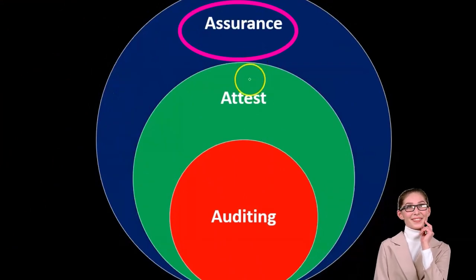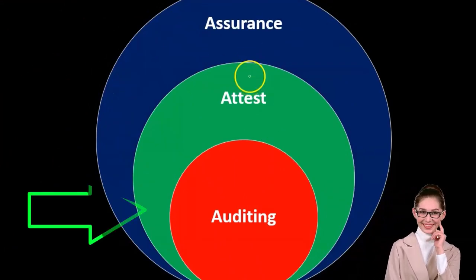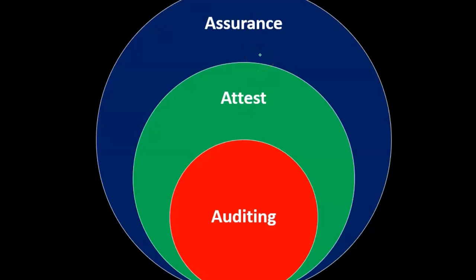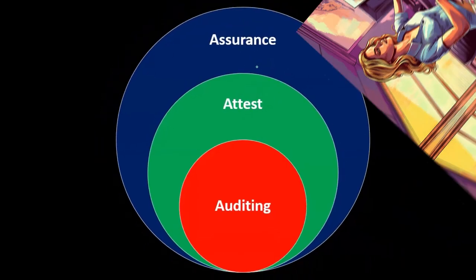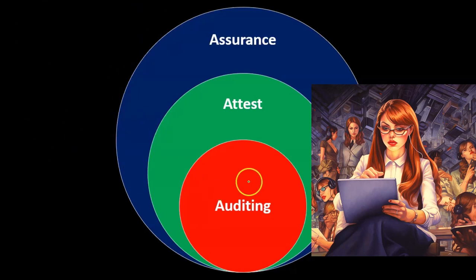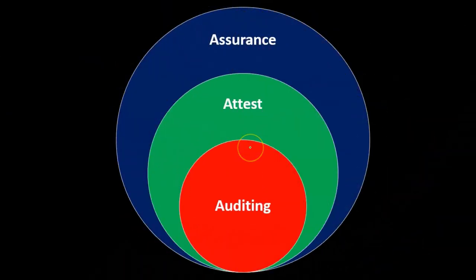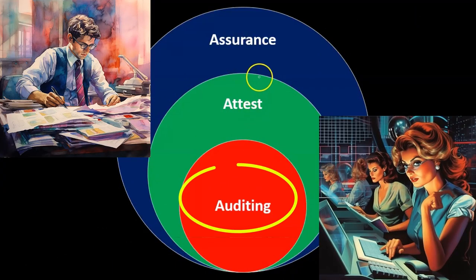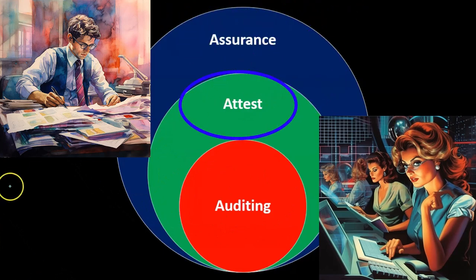The same relationship holds with assurance — assurance is a broader category. All attest engagements are components of assurance services; however, not all assurance services are attest engagements. When thinking about what public accounting firms provide, the audit is often the most prized and biggest revenue generator because it takes the most work. But firms also do attest engagements that are not audits, and other assurance-type services that aren't attest engagements.